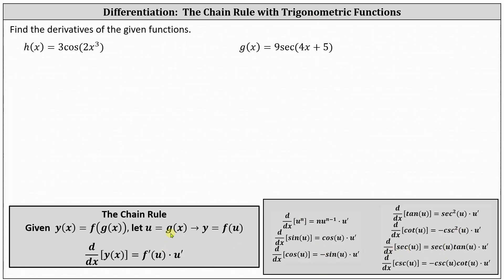On the left, we have our notes for applying the chain rule. If y of x is a composite function in the form of f of g of x, we will let u equal g of x, the inner function, which will allow us to write y as a function of u as y equals f of u. Therefore, the derivative of y of x with respect to x, applying the chain rule, is equal to f prime of u times u prime, where f prime of u is the derivative of the outer function f evaluated at the inner function u, and u prime is the derivative of the inner function.